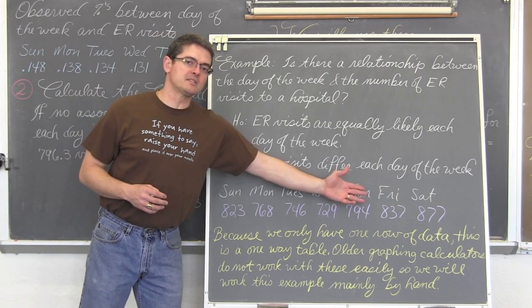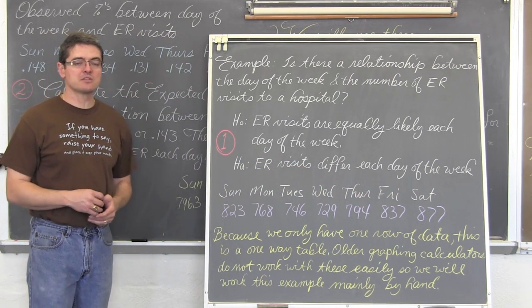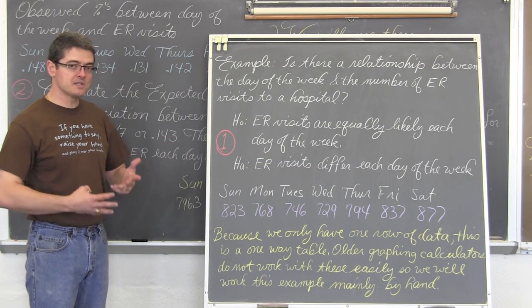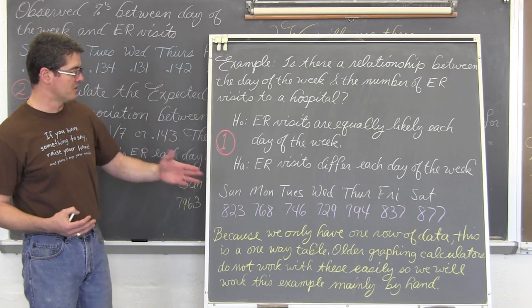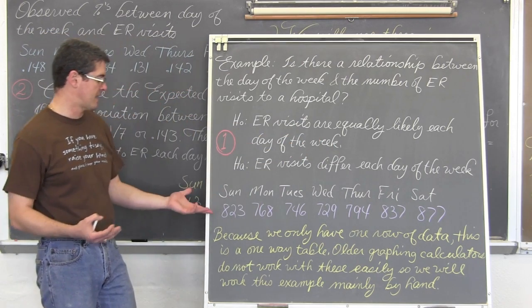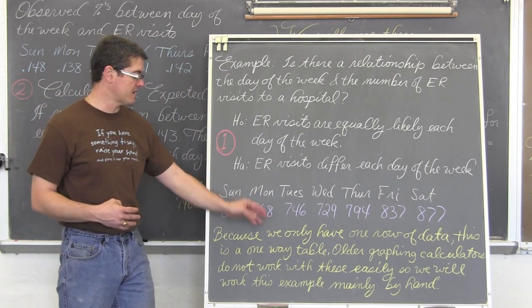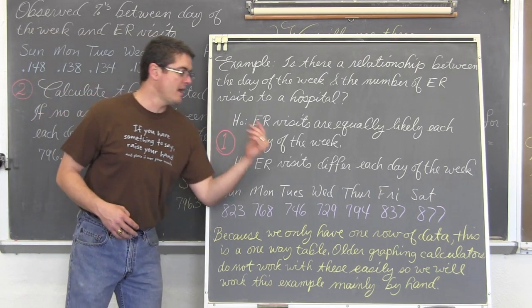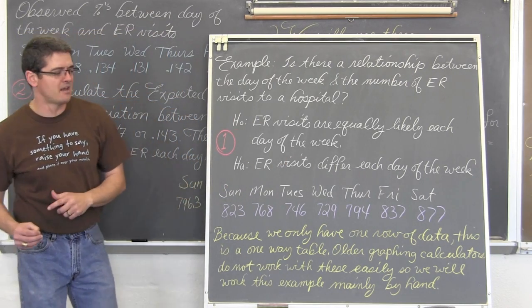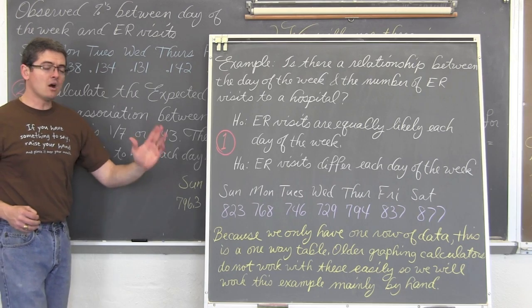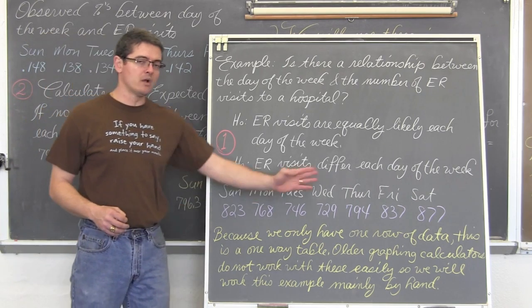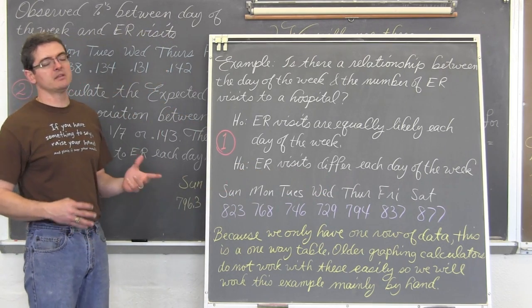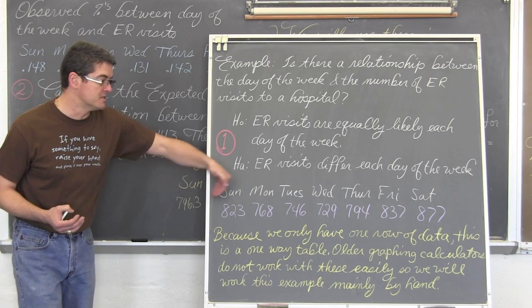So over the three months of collecting data, we have these count values for ER visits during the week. So Sunday through Saturday, we have the counts of 823, 768, 747, 729, 794, 837, and 877. Now we would call this a one-way table. There is only one row of data. And we are looking at the number of ER visits per day of the week.